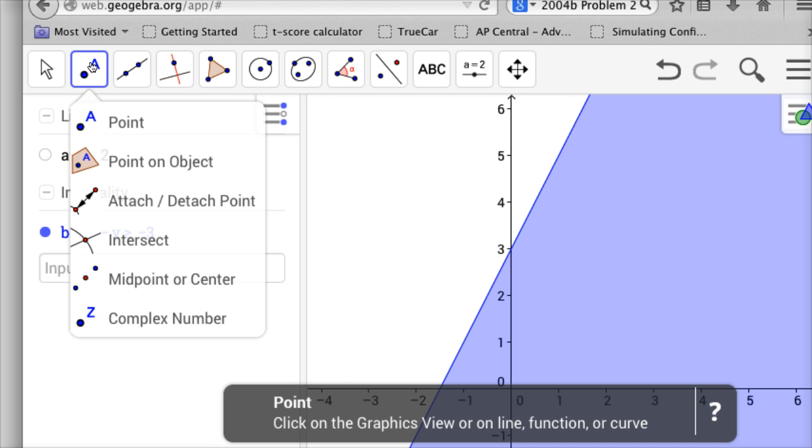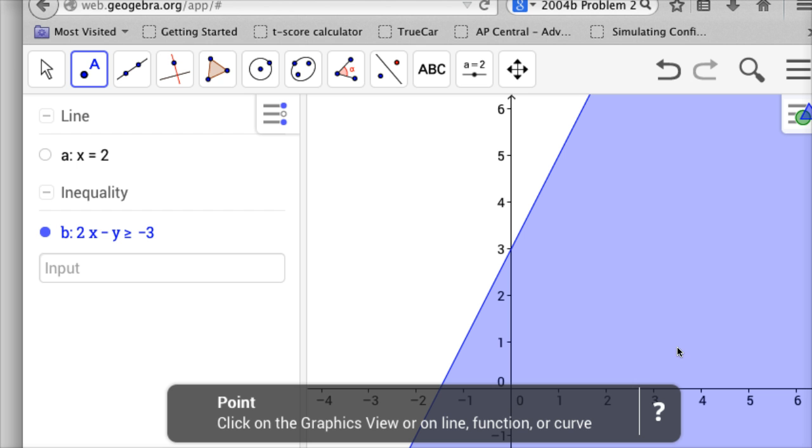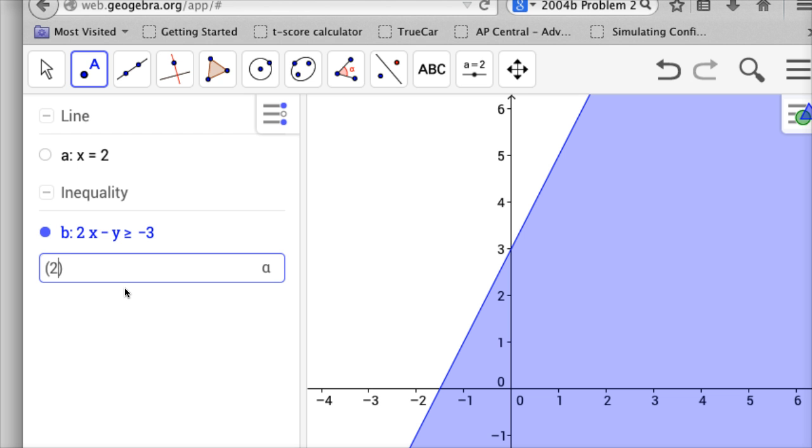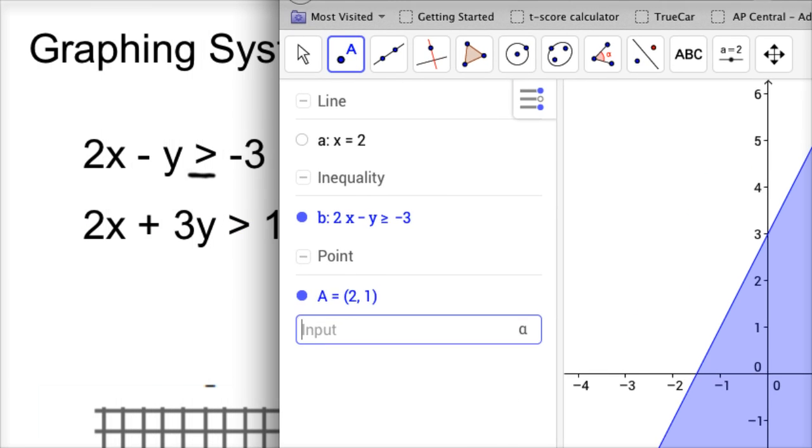Let me stick that point in there, so you can kind of see. So 2, 1, well, and actually I'll just put it in the input value, 2, comma, 1, and it's there exactly. So that was the point that was true in the top equation, but not true in the bottom equation. So let's put that bottom equation in now.